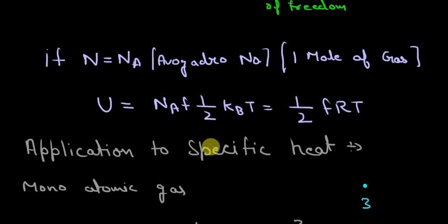Now if we substitute n equal to NA that is one mole of a gas then we will get NA into kB that means one mole of gas into Boltzmann constant is equal to the gas constant R. So this formula becomes 1 by 2 f into R into T.